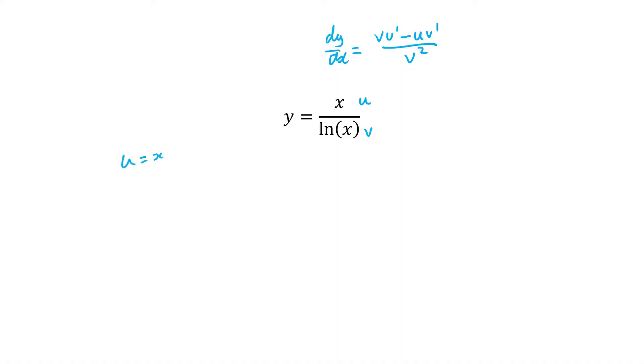So now we go ahead and find their separate parts. So u is x, u dash the derivative of x which is 1, v which is going to be the natural log of x and v dash which is going to equal 1 over x.